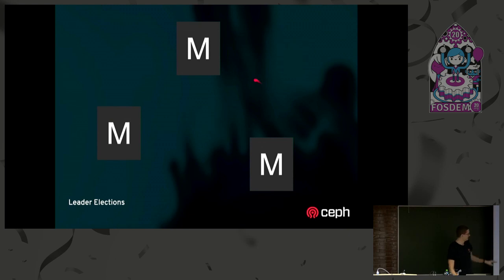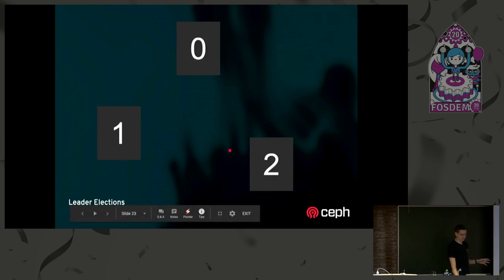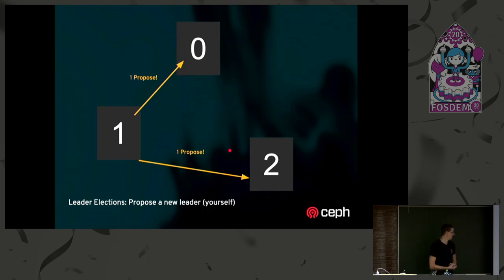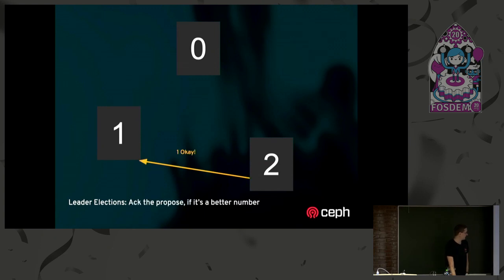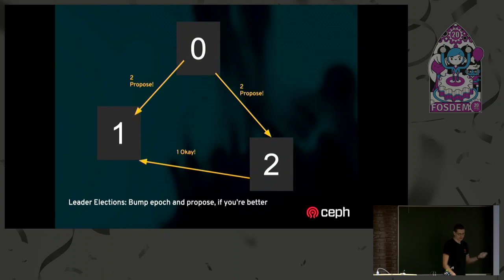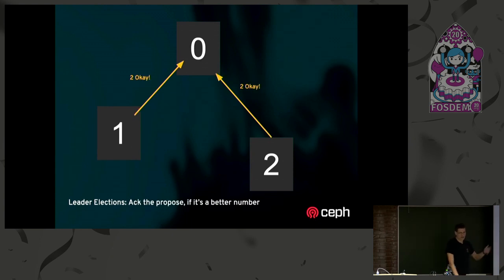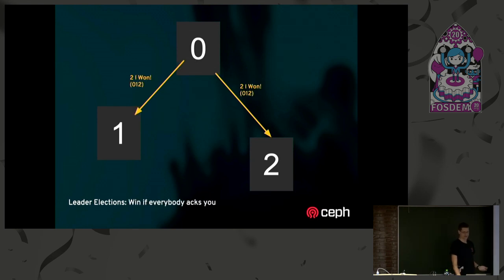Visually, with three monitors numbered zero, one, and two: monitor one proposes to be leader at epoch one. Monitor two defers because one has a better number. But monitor zero says no, I'm a better number, bumps to epoch two and proposes to everybody. Monitor one gets that proposal and defers to zero, monitor two also defers to zero, and zero becomes the leader and sends out a victory message. That works great normally.